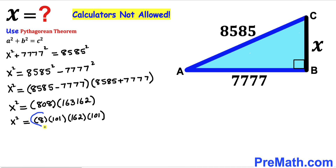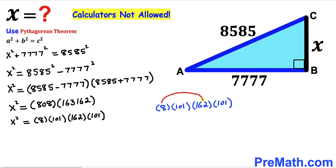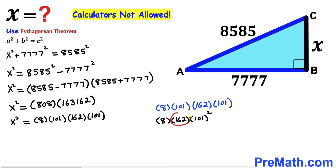Focusing on the right-hand side and rearranging, I'll group 101 × 101 together and 8 × 162 together. So we get 8 × 162 × 101², which we can write as 8 × 162 × 101². Now let's factor 162 as 2 × 81, giving us 8 × 2 × 81 × 101².